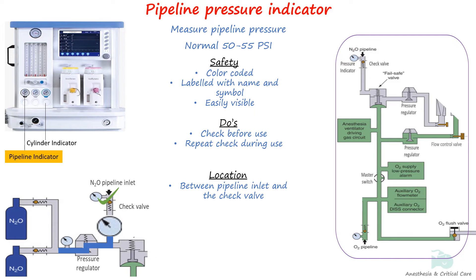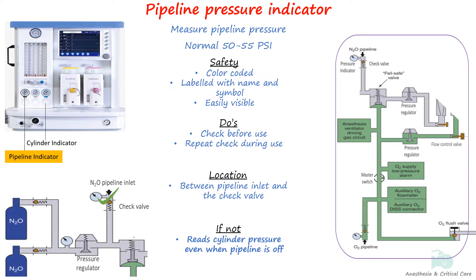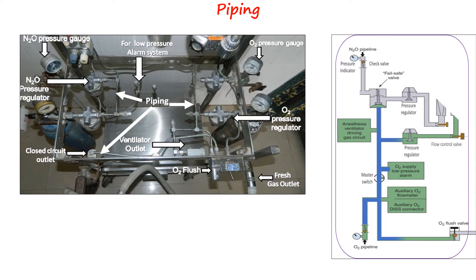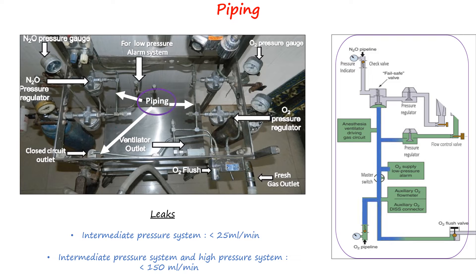If the indicator was installed downstream of the check valve, the gas flow from an open cylinder would be read by the pipeline indicator until suddenly the cylinder is exhausted. Piping consists of pipes used to connect components inside the machine. It must be able to withstand four times the intended service pressure. Leaks between the pipeline inlet or cylinder pressure-reducing system and the flow control valve should not exceed 25 liters per minute; if the yoke and pressure-reducing system is included, leakage may not exceed 150 liters per minute.